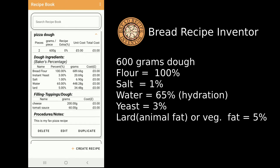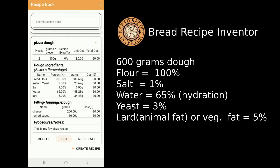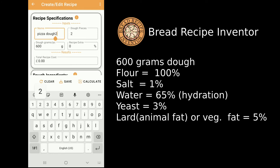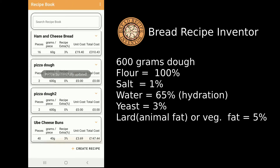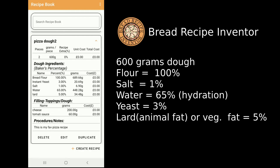We already have the lard ingredient listed. To avoid confusion, let's edit this one and rename it 'Pizza Dough Number Two.' Save it again and go back — you can now find the baker's percentage for the dough including toppings, the number of pieces, the weight per dough, and so on.